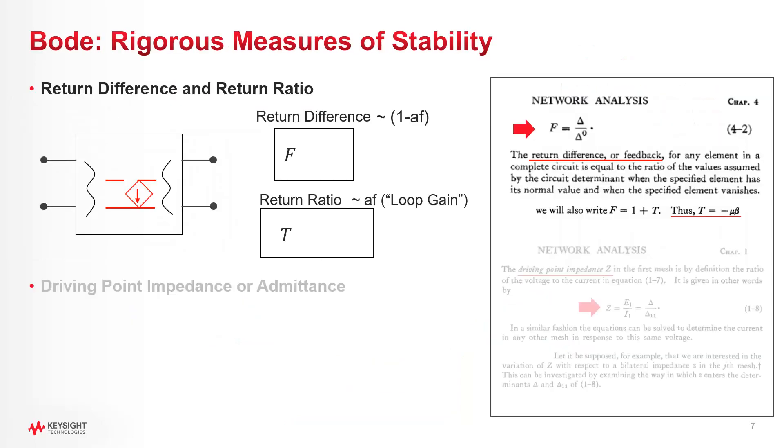I'm going to show these in the reverse order to the way Bode presented them, starting with return difference, because that approach is more like loop gain analysis. And then I'll cover driving point impedance, which is probably more fundamental, but it's a little different than the framework presented so far. I also put the part of Bode's book that introduces these concepts on the right of this slide, so you can see exactly where they were introduced.